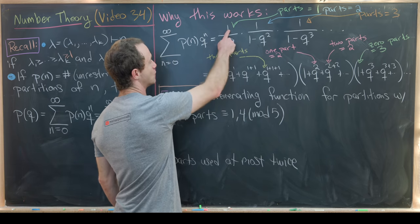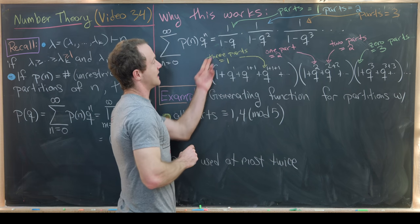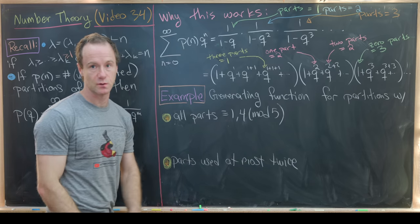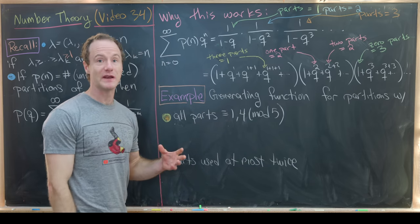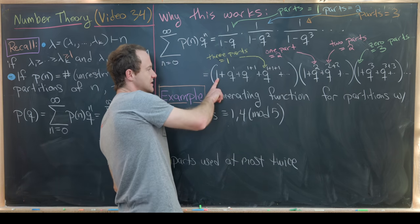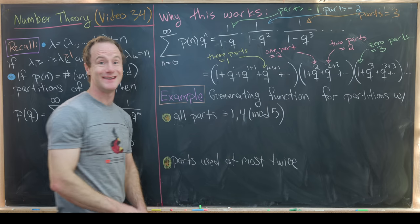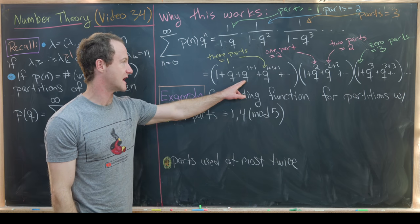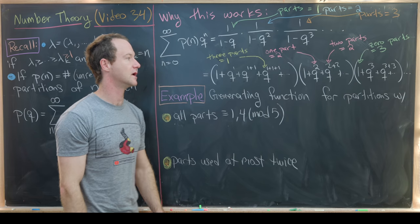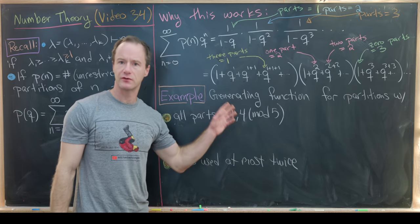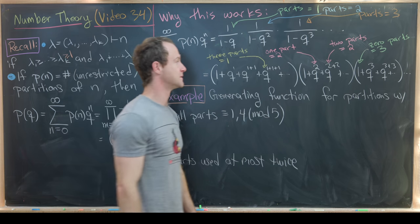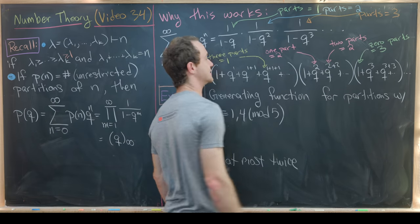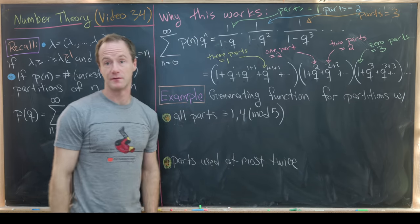If we expand each factor as a geometric series, we can see more of what's going on. For instance, 1/(1−q) expands to 1 + q + q^(1+1) + q^(1+1+1) + ..., where each term controls how many parts of the partition are equal to 1. The constant 1 corresponds to not using 1 at all; q corresponds to a single part equal to 1; q^2 to two parts equal to 1; and so on. Similarly, q^2 corresponds to one part equal to 2, q^(2+2) to two parts equal to 2, and so forth.